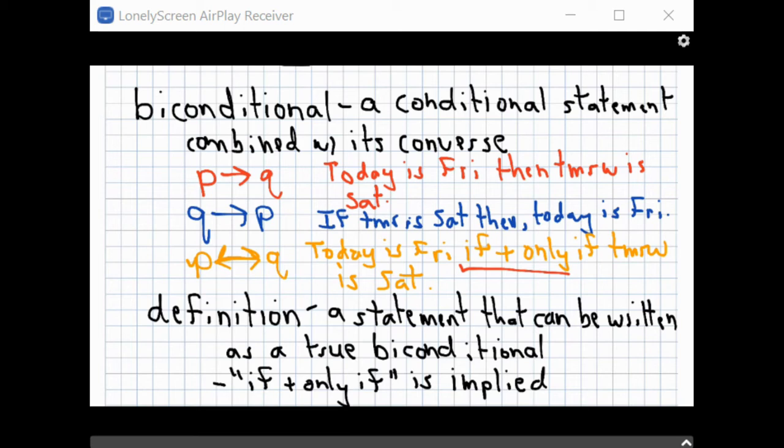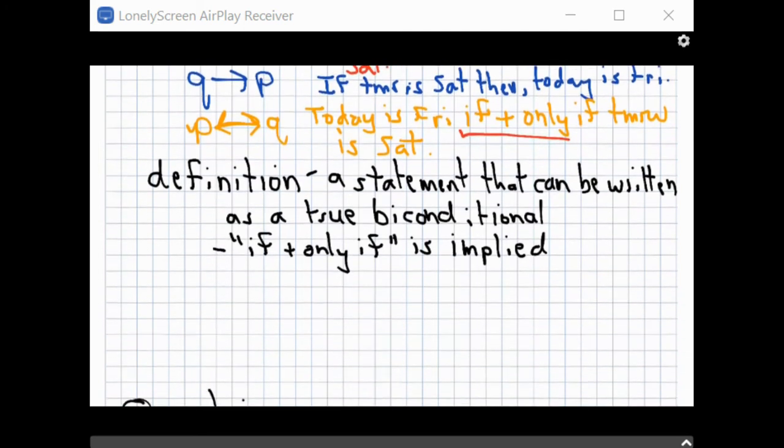Where you had if and then with a conditional statement, now you have if and only if with every biconditional. And this one happens to be true because both the condition is true. If today's Friday, then tomorrow has to be Saturday. And the converse is true. If tomorrow is Saturday, then today must be Friday. And so they're more restrictive than a typical conditional because they have to be true both ways.